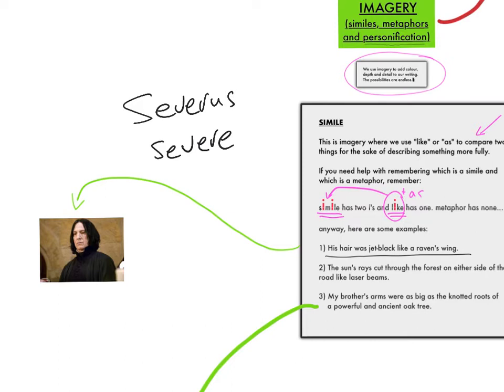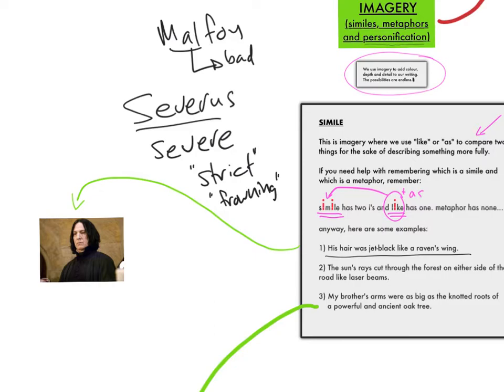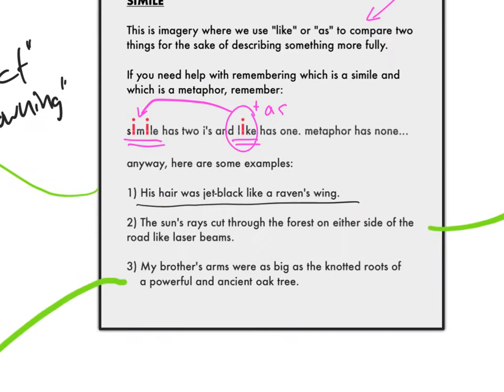Severus — because if you're severe, you're quite strict and frowning. And Malfoy, for example — 'mal' means bad, comes from the French. So he's a bad boy, Malfoy. Anyway, some great names in Harry Potter, but we are getting distracted.